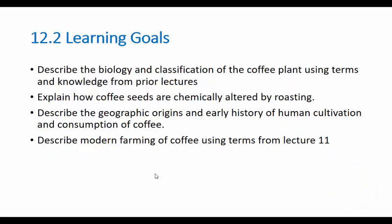Now let's move into coffee itself. We're going to use terms from previous lectures to describe coffee plants — their biology, taxonomy, and classification — and talk about their flowers and fruits using terms from recent lectures. Then we'll talk about the process of roasting coffee and the chemistry of what's going on, the geography and consumption of coffee, and modern farming using terms like monoculture and polyculture.